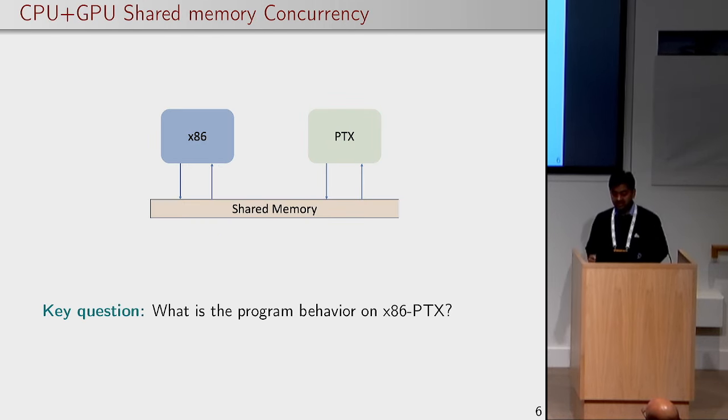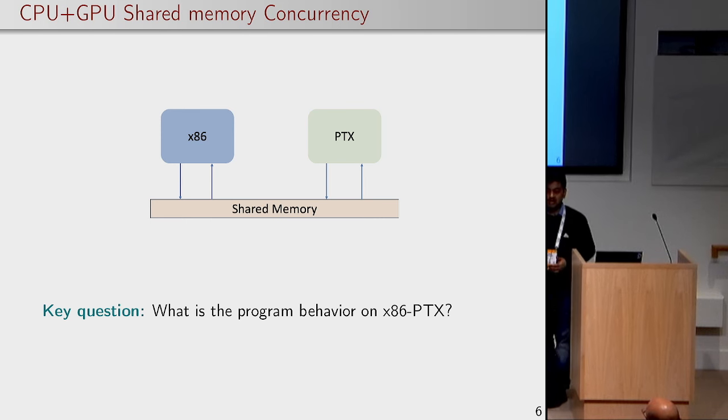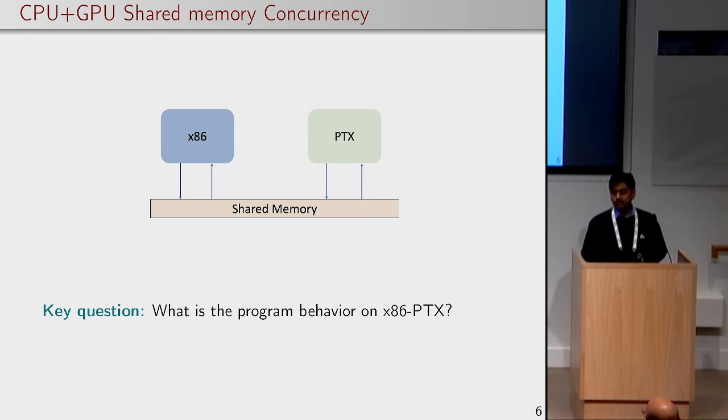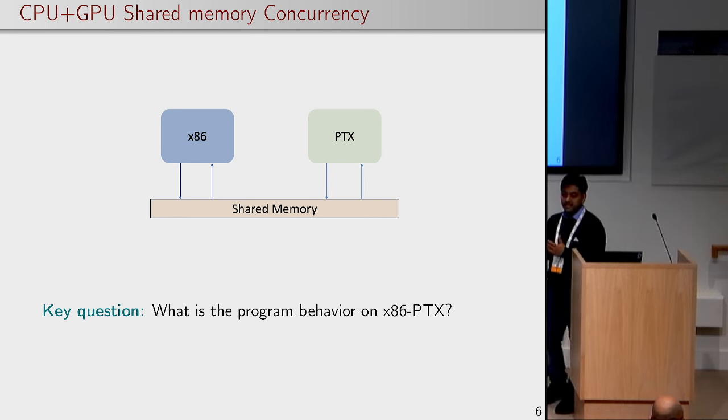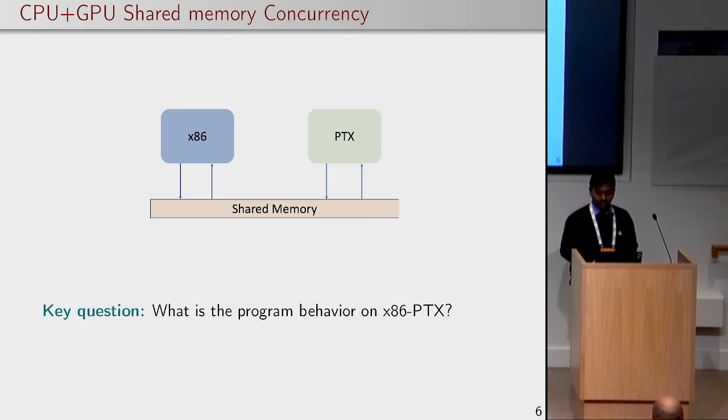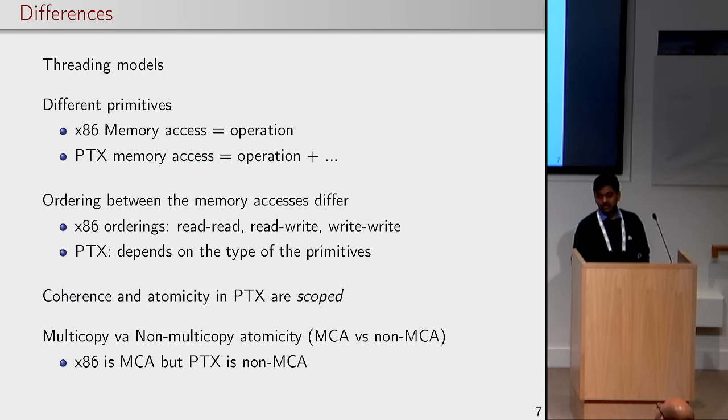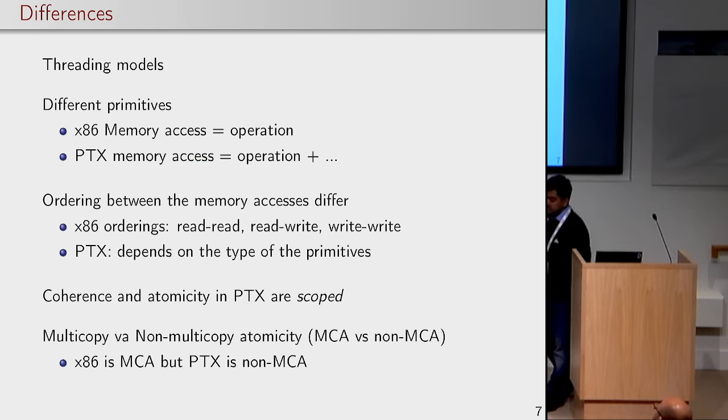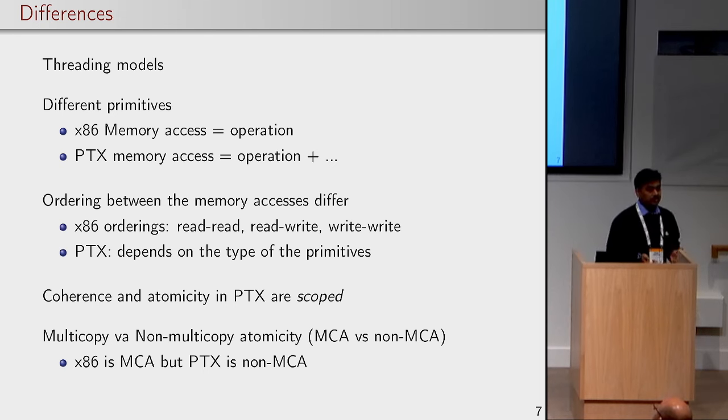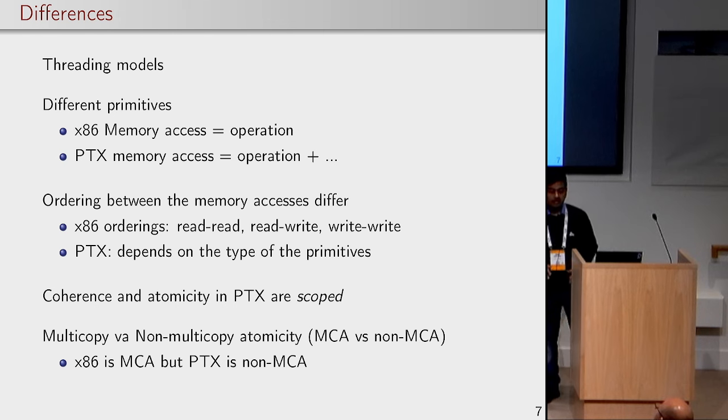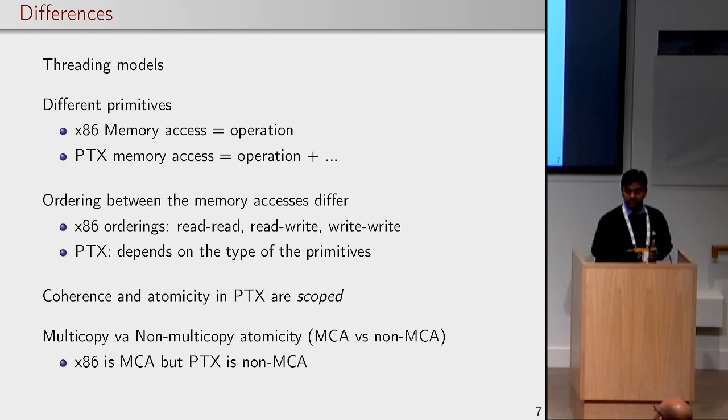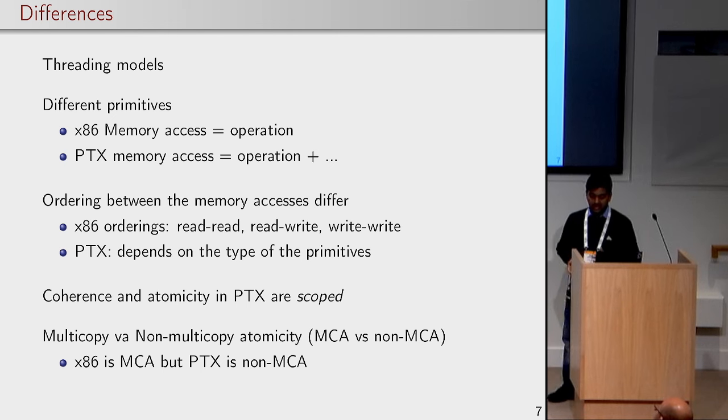With this understanding, we wanted to understand for another type of heterogeneous system which comprised of x86 CPU and PTX which stands for NVIDIA GPU. The question is what is the possible behaviour? When we went to this area there was first we wanted to understand what are the differences between these two different types of processors. There is a long list. You need not to read through that. But basically the threading models are different, the primitives have different properties, the orderings of these accesses are different. I will come to that.